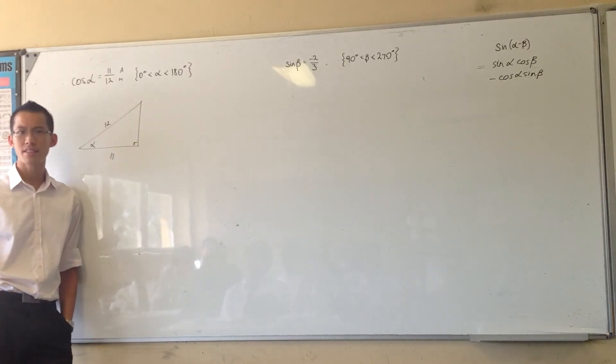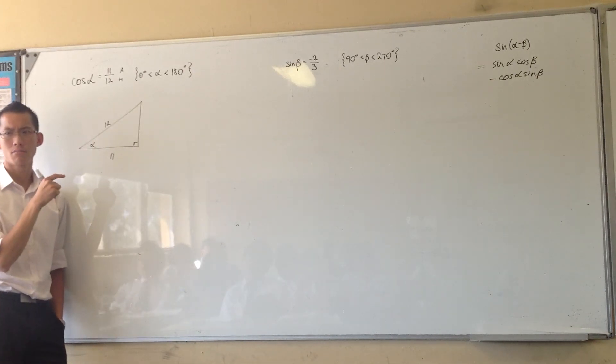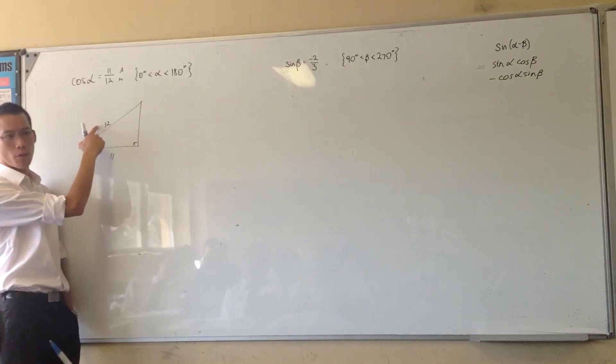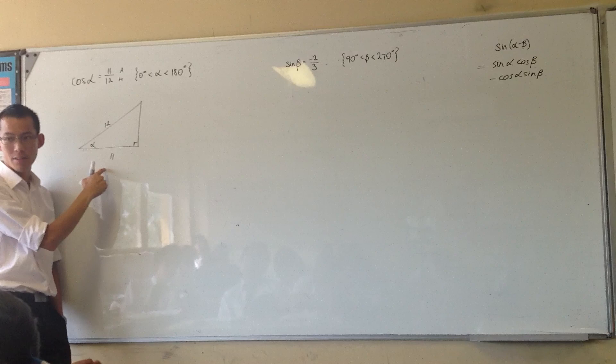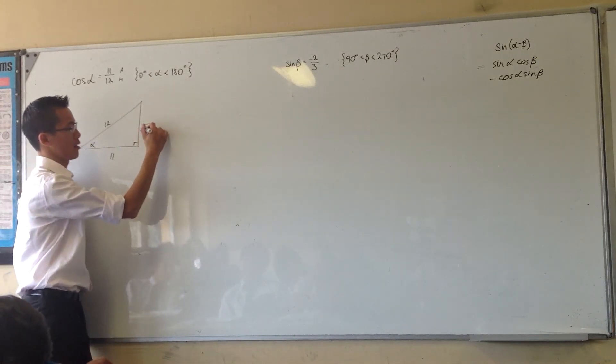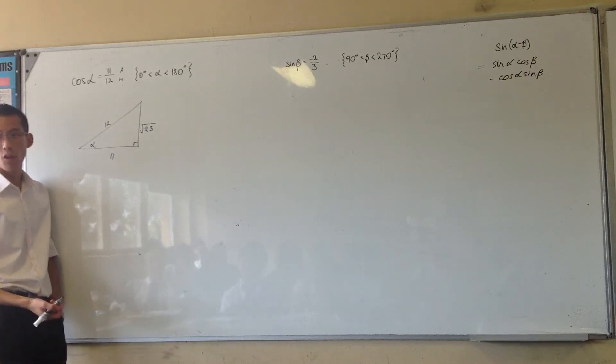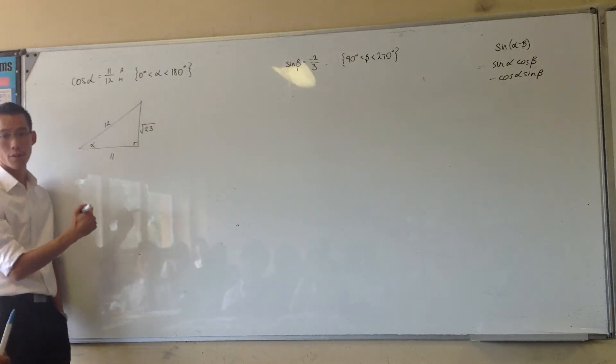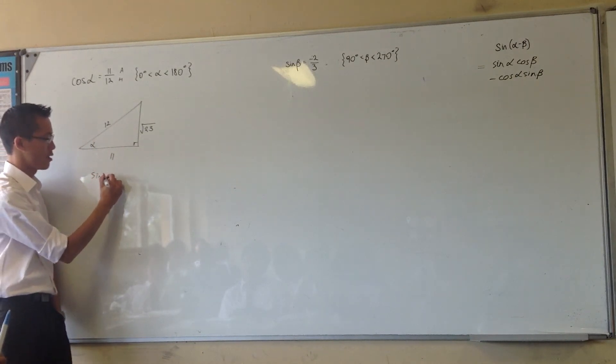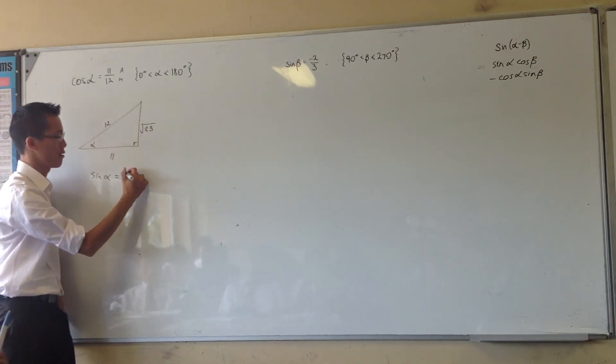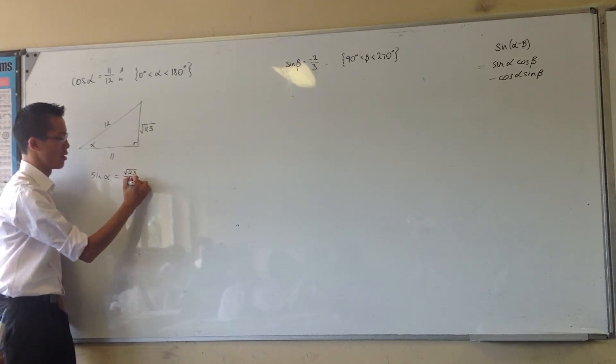Now what does that tell you the other side is? Use Pythagoras. Yeah, you get 144, 121, so yeah, root 23. Therefore I can say if that's what cos α is, sin α should be opposite on hypotenuse, right? Root 23 on 12 as well.